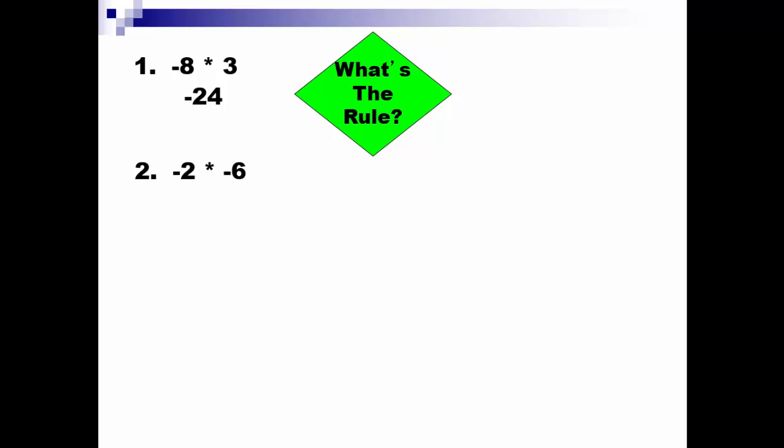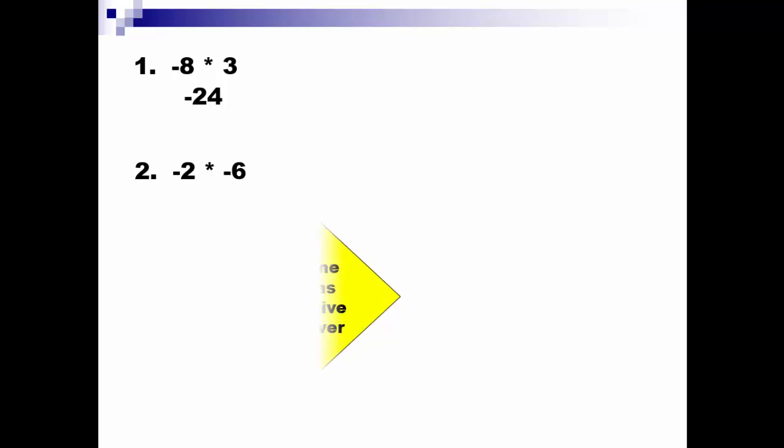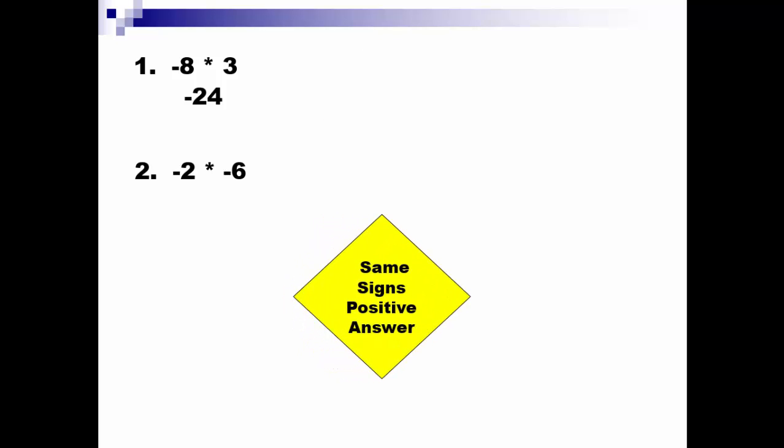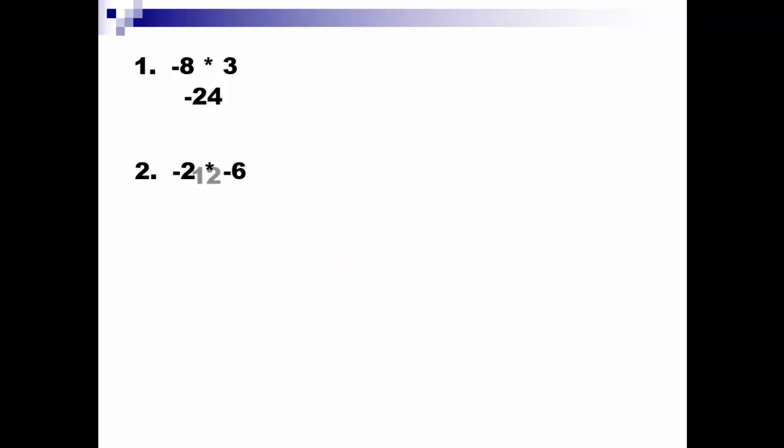They're being multiplied — we have a negative times a negative. If you have the same sign when you're multiplying, the answer will be positive. A negative times a negative is a positive. 2 times 6 is 12, so this answer is positive 12.